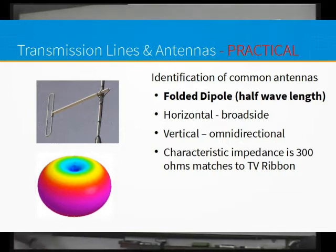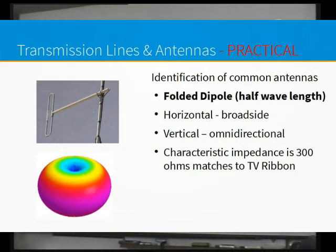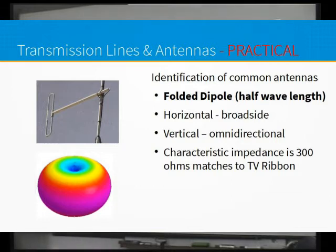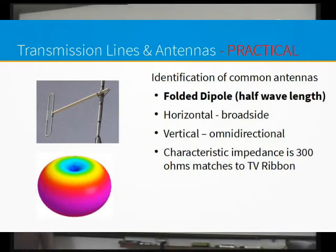The key thing with the folded dipole is that when you fold a dipole, the characteristic impedance is 300 ohms. If you remember old television antennas, the easiest one you could make was a coat hanger bent into a folded dipole with a bit of 300-ohm ladder line - and you had yourself a television antenna. I remember when I was a kid we had one of those and it worked.